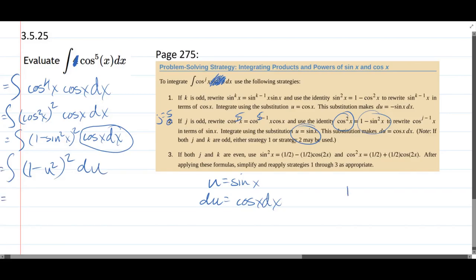How do we integrate this? Well, we have to multiply one minus u squared times one minus u squared. We're going to FOIL this. So it's one times one is one, minus u squared minus u squared minus 2u squared. Negative u squared times negative u squared is positive u to the fourth.